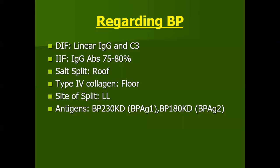Regarding bullous pemphigoid: DIF shows linear IgG and C3; indirect immunofluorescence highlights IgG in 75–80% of cases. On salt split, immunoglobulins are seen at the roof of the blister and type 4 collagen at the floor. Site of split is mainly lamina lucida. Antigens are the 230 kDa antigen (part of hemidesmosome, also called BP antigen 1) and the 180 kDa antigen (also called BP antigen 2, part of the basement membrane).